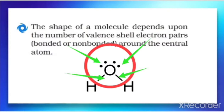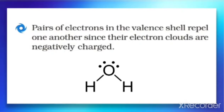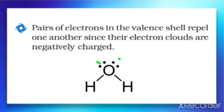The next postulate: pairs of electrons in the valence shell repel one another since their electron clouds are negatively charged. These electron pairs — bonded and non-bonded — will repel each other because they are negatively charged. So lone pair repels lone pair, lone pair repels bond pair, and bond pair repels bond pair.